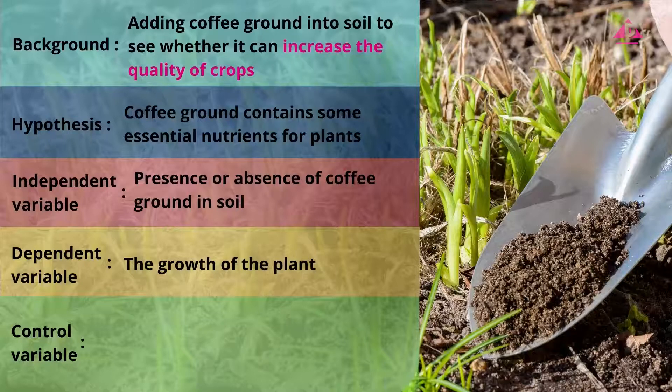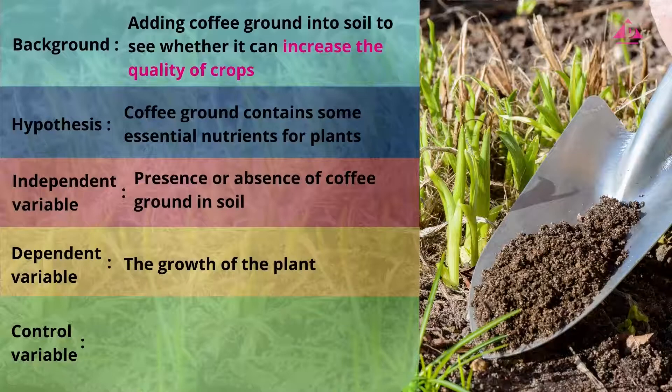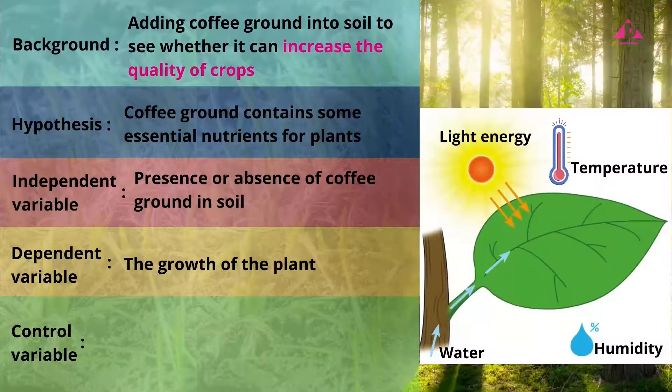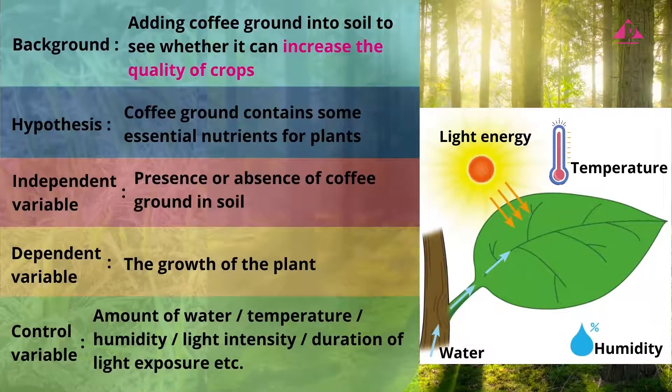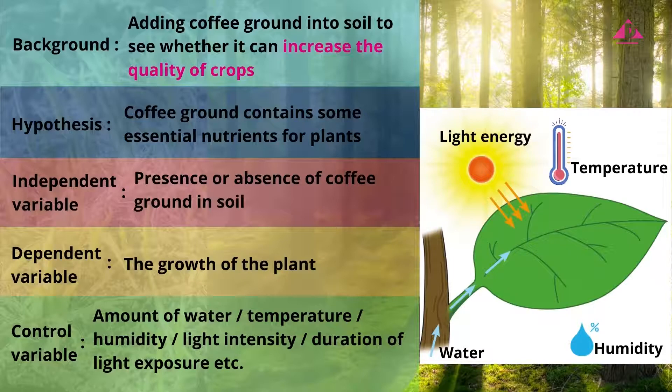In both experimental and control setups, other factors that will affect the growth of plants should remain constant, so that the experimental result will only be affected by the independent variable. The control variables of this experiment are the amount of water provided to the plants, temperature and humidity of the environment, light intensity, or the duration of light exposure.